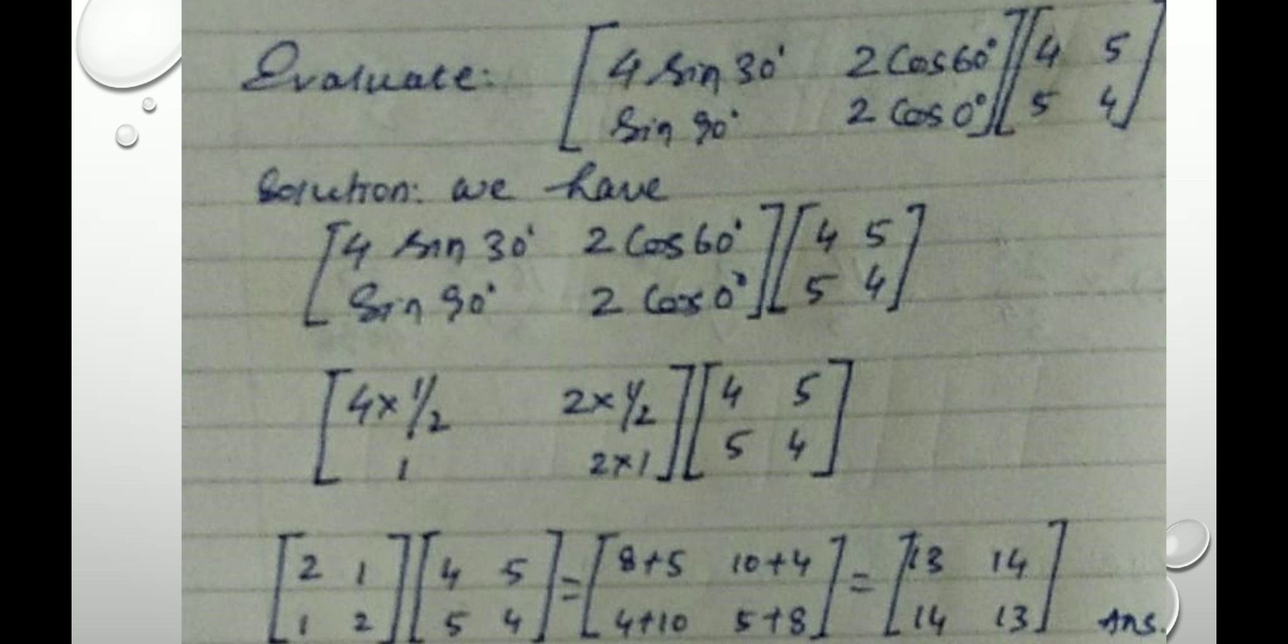Now, it comes 2, 1, 1, 2, then multiplied with 4, 5, 5, 4. Performing the multiplication: 8 plus 5 equal to 13, 10 plus 4 equal to 14, 4 plus 10 is 14, 5 plus 8 is 13. Then the final resultant matrix is 13, 14, 14, 13.